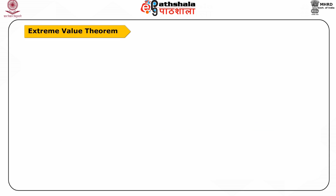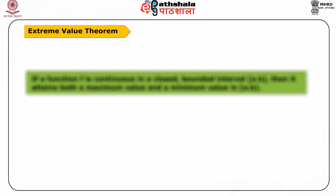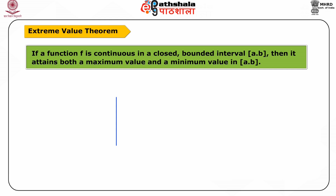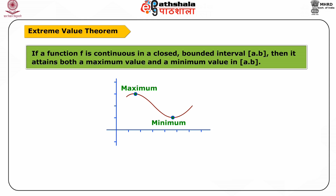Let us first start with the extreme value theorem. In the application of critical points in a continuous function f, the extreme value theorem determines both the maximum and minimum value in a closed interval AB. If f is continuous on a closed interval AB, then it has both a minimum and a maximum point. That is, there are real numbers c and d in AB so that for every x in AB, f(x) ≤ f(c) and f(x) ≥ f(d).